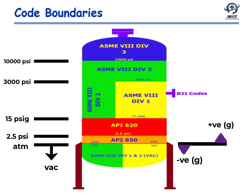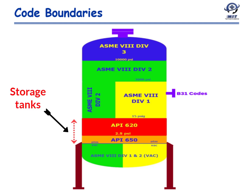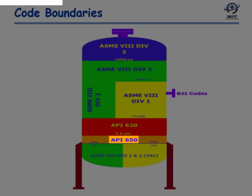Here is a graphical presentation of the pressure ranges for BPVC Section 8 codes and API storage tank standards. API 650 operates near atmospheric pressure in the orange color region up to 2.5 psi. From 2.5 psi to 15 psi gauge, we have API 620 in the red color.